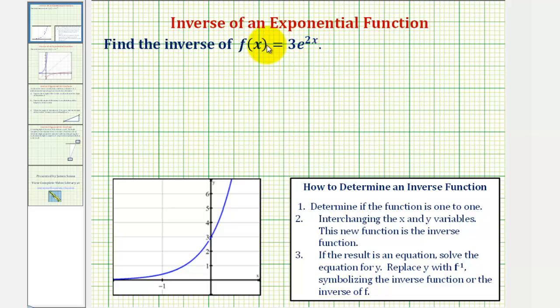The first thing we'll do is determine if the given function has an inverse function. Only one-to-one functions have inverse functions. A one-to-one function is a function where every output or every function value has only one input or one x value.